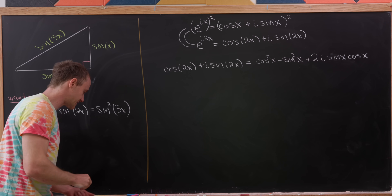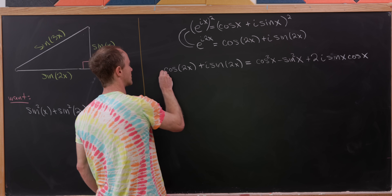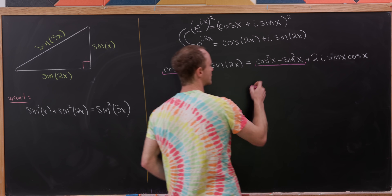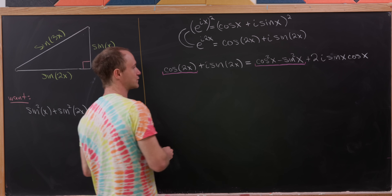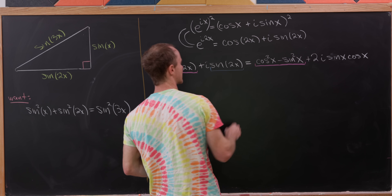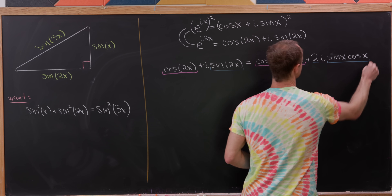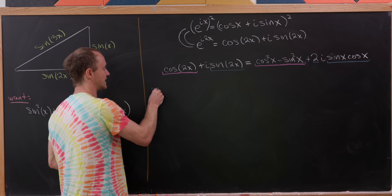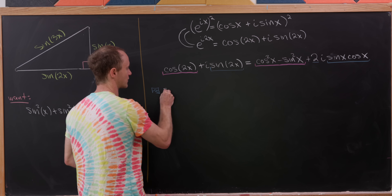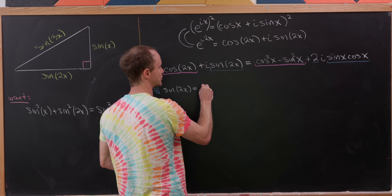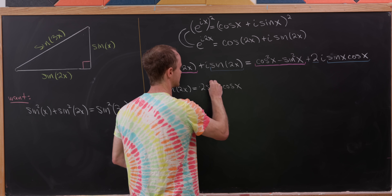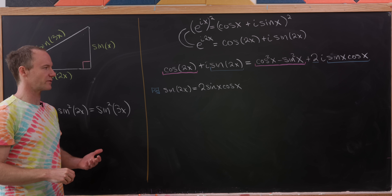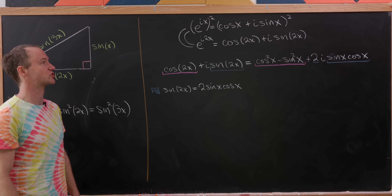We can simply equate the real parts — cosine 2x equals cosine squared x minus sine squared x — as well as the imaginary parts. So sine 2x equals 2 times sine x cosine x. We want that second equation for our purposes: the sine of 2x is equal to 2 times the sine of x times the cosine of x. Now that we've created a double angle formula, let's similarly create a triple angle formula.